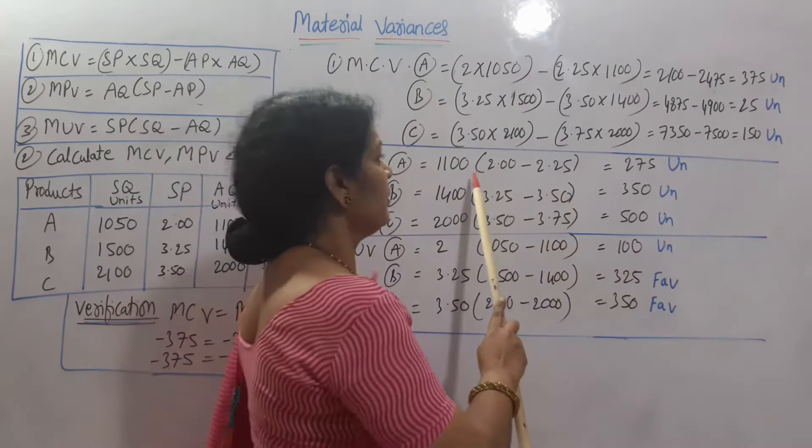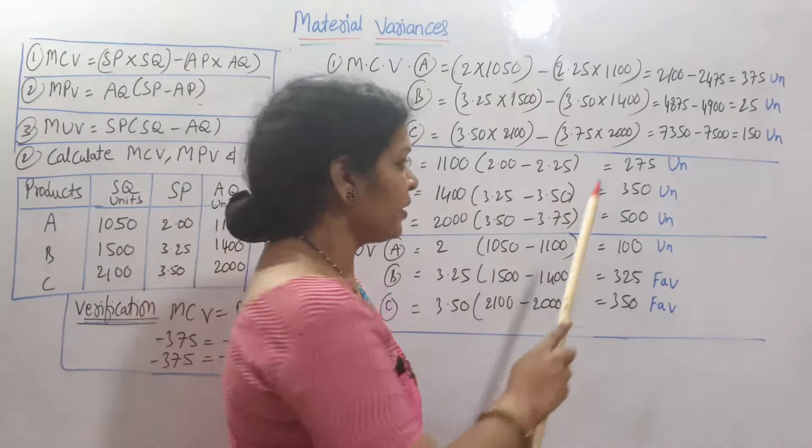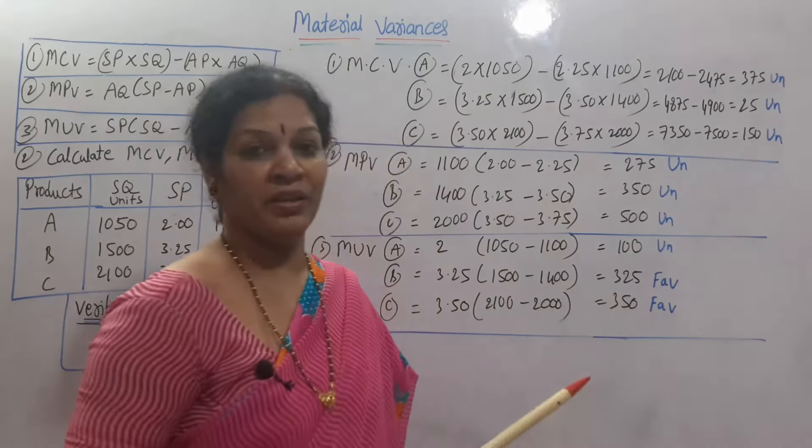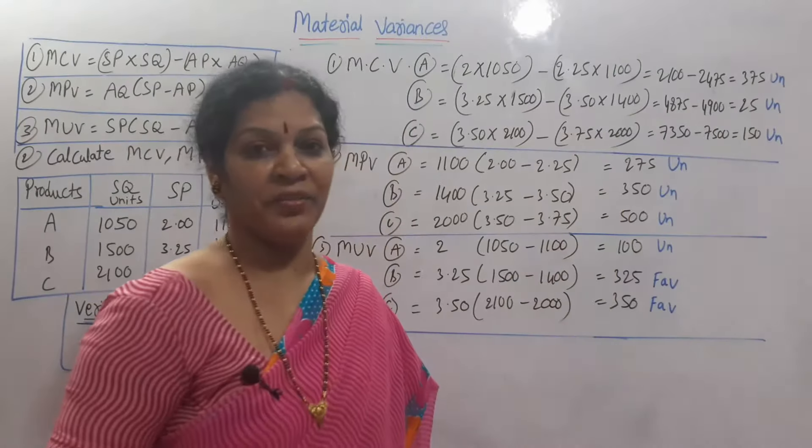Now, if you see the answer, 275 unfavorable for A product. For B product also, 350 unfavorable. C product also, 500 unfavorable. Over.